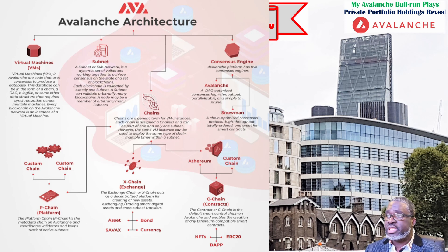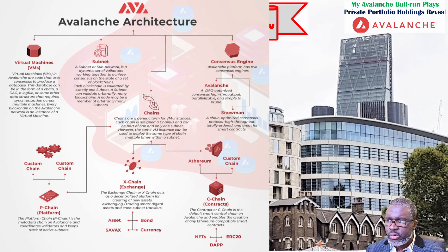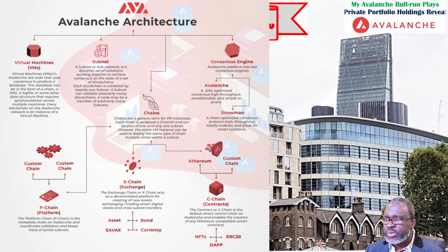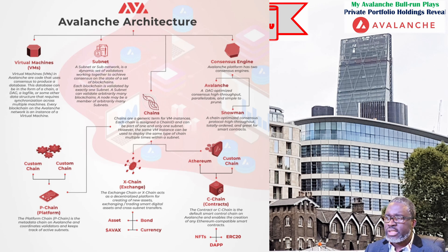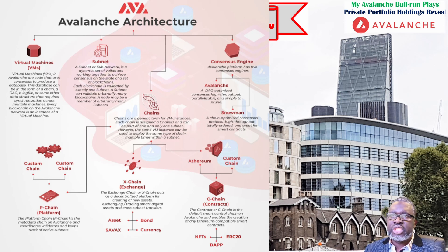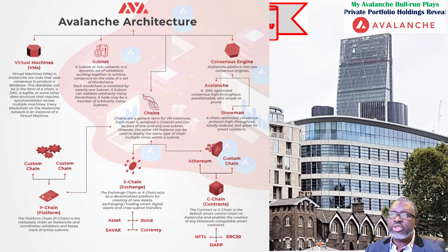Avalanche enables the launching of decentralized applications and enterprise blockchain services. Developers can create custom blockchains called subnets, which rely on a subset of Avalanche's existing validator set for network security. Subnets are sovereign networks within the Avalanche ecosystem, each with its own tokenomics, rules, and validators. Each subnet is independent, and can establish its own regulatory compliance measures such as KYC or AML checks, or requirements to be located within a certain jurisdiction.